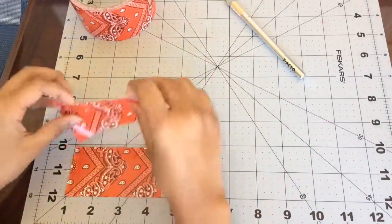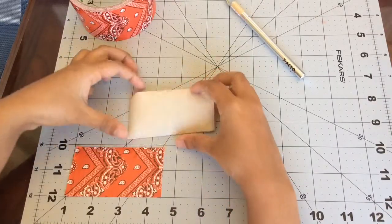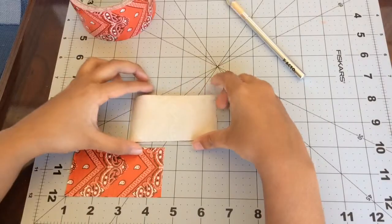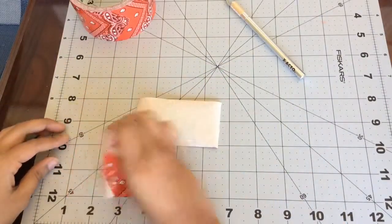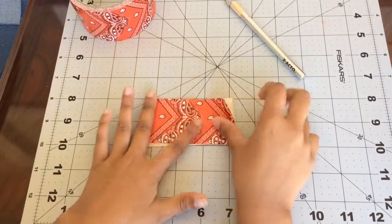Now flip one of the duct tape pieces over, and take the other duct tape piece and place it on top of the first one, sticky side facing down. It doesn't need to be perfect.